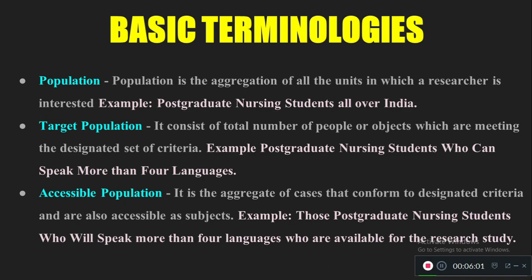Accessible population refers to those who meet the criteria and are also available at the time of data collection. For example, living in Panipat, Haryana, I can travel to Punjab, Delhi, Himachal, or Rajasthan to collect data. But I cannot go to Andaman and Nicobar Island or to Kerala or Tamil Nadu because travel costs would be too high. So even though those people are in my population, they are not in my accessible population.